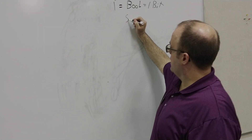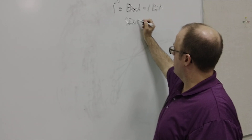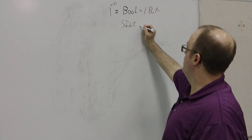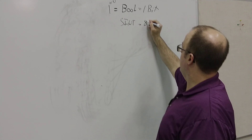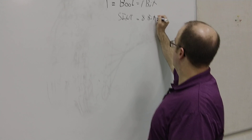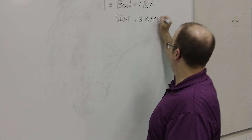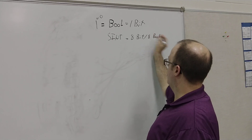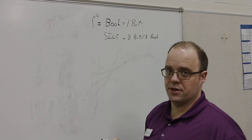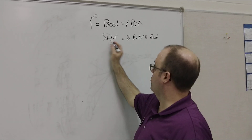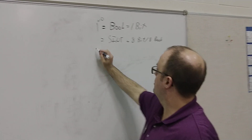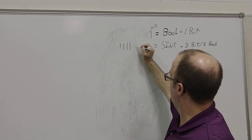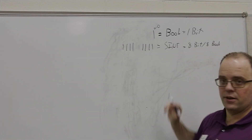The next level up in Allen-Bradley is what they call a SINT, or simple integer. This will be 8 bits, or 8 bools. A bool and a bit are basically the same thing. And this has a range — it will just be a bunch of 1s and 0s, 8 digits long.